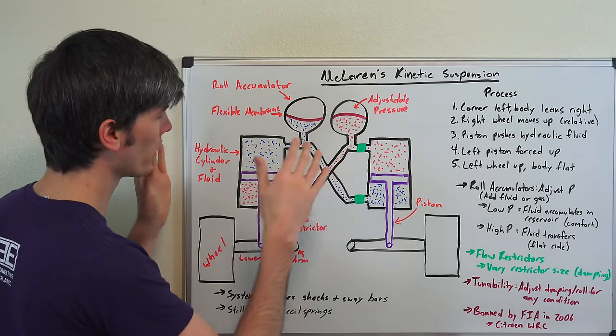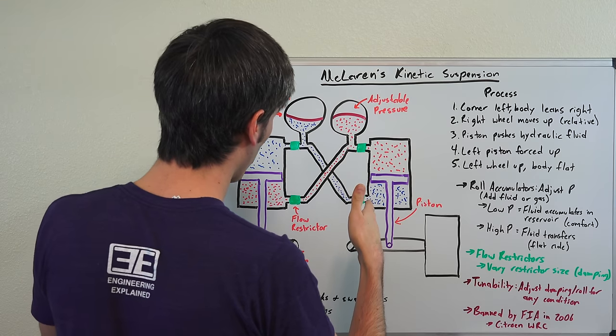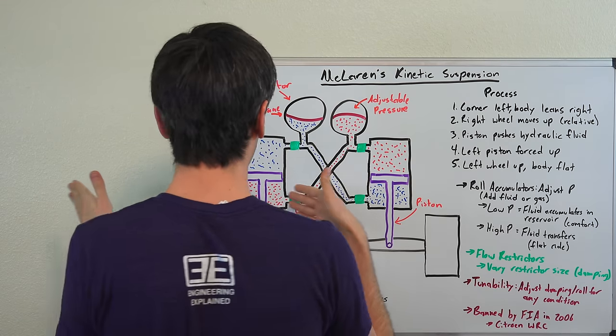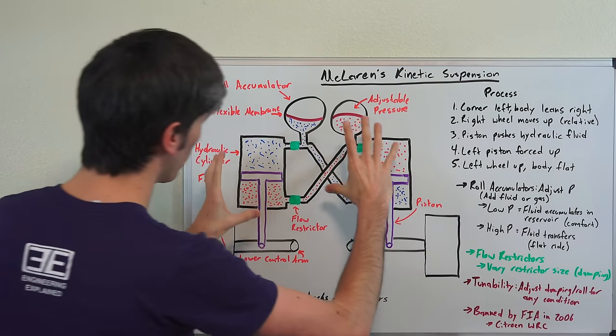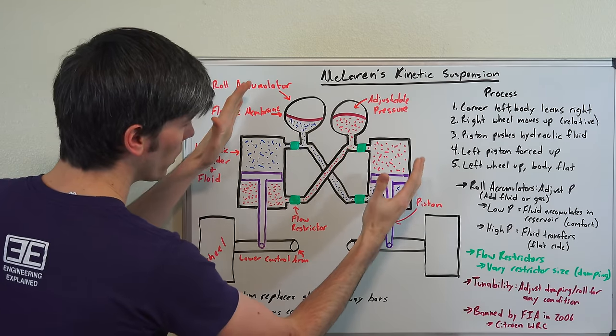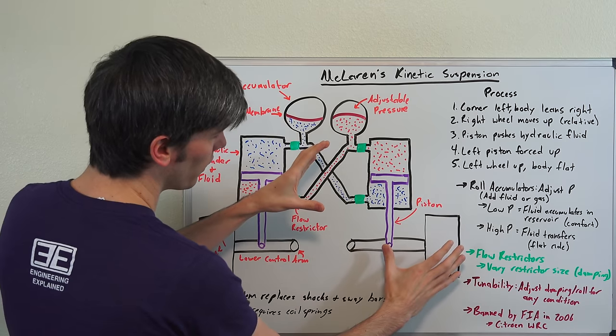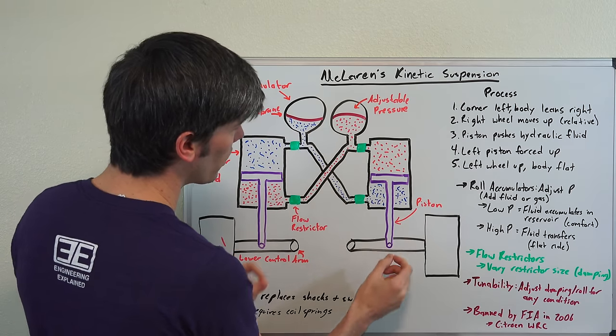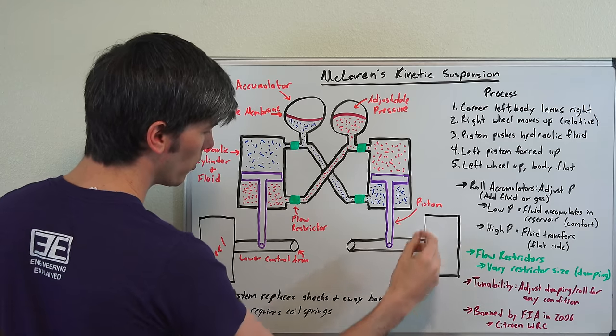So when you're going into that right corner, or taking a left corner rather, and the body is rolling right. All of this car is going to want to roll right, so relatively speaking this wheel is moving up relative to the body. So as this right wheel moves up...